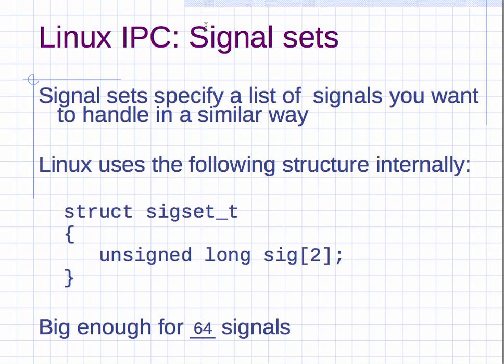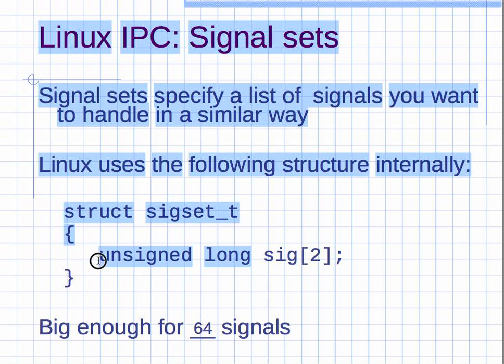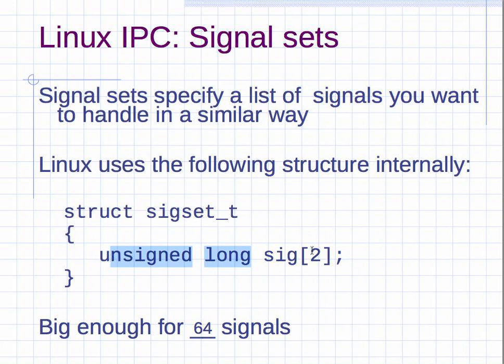If you want to specify a list of signals you want to handle in a similar way, you can use the signal set. This is just a struct defined in Linux, so this is specific to Linux and almost all versions of Unix will use sigset_t. If you look at what's inside it, it's an array of two unsigned longs. Unsigned longs are just 32 bits, so two of them—an array of two—gives you 64 bits. That's big enough for 64 signals. Each signal just takes up a single bit.